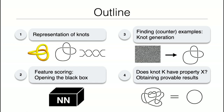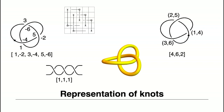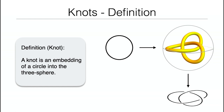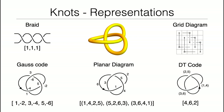The third part concerns using generative models to find examples or counterexamples for conjectures. Once you've arrived at a conjecture using steps one and two, you might want to produce more examples that either substantiate it or produce counterexamples to test it. Finally, I will give examples of how you can use machine learning to arrive at provable results — Jim already mentioned how to do this with reinforcement learning. So: representations of knots. A knot is just an embedding of a circle into the three-sphere.